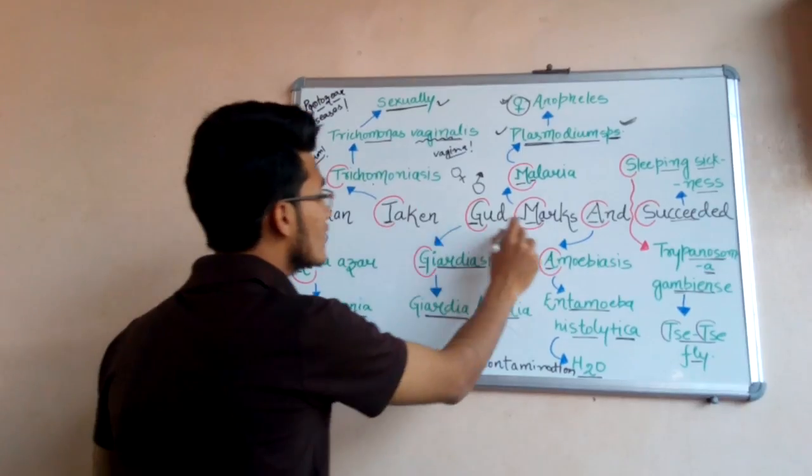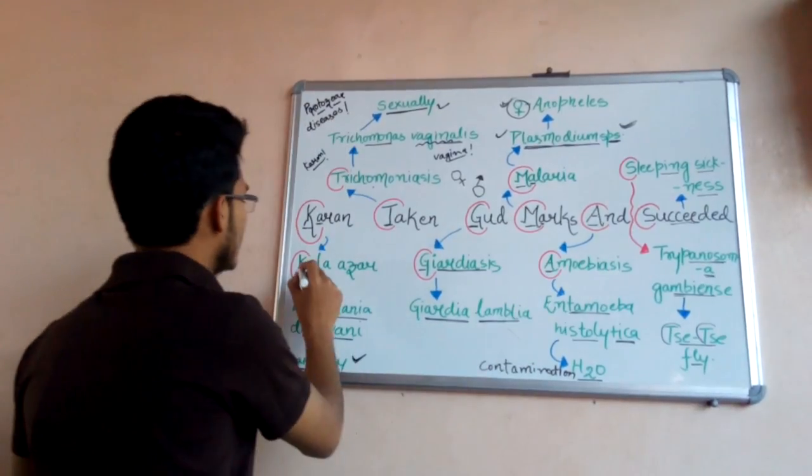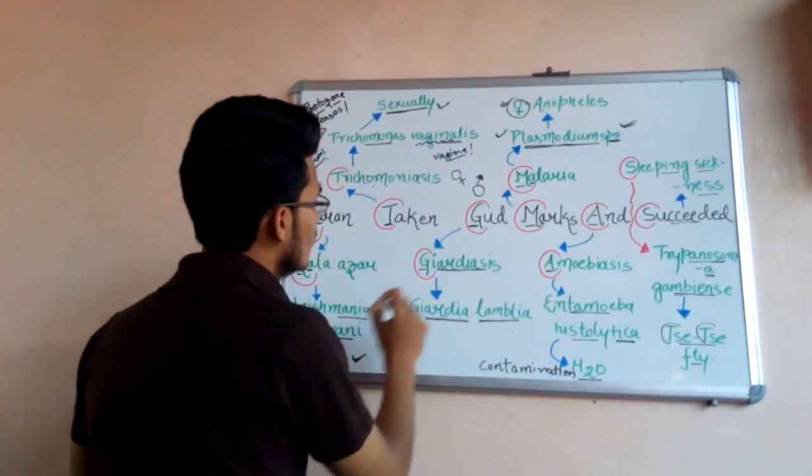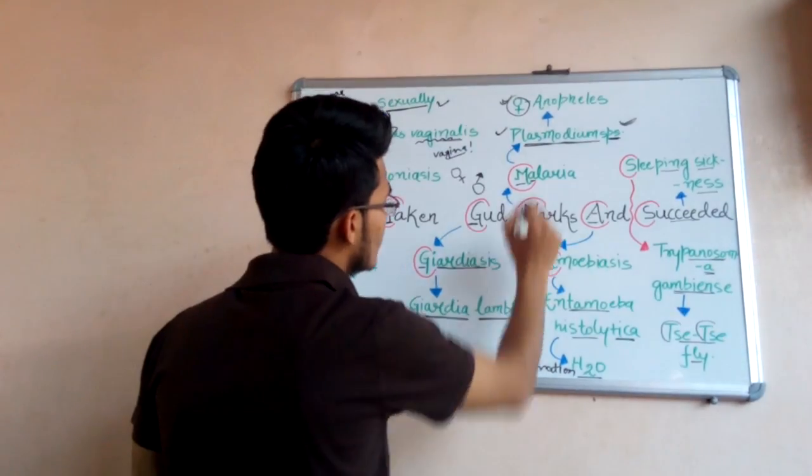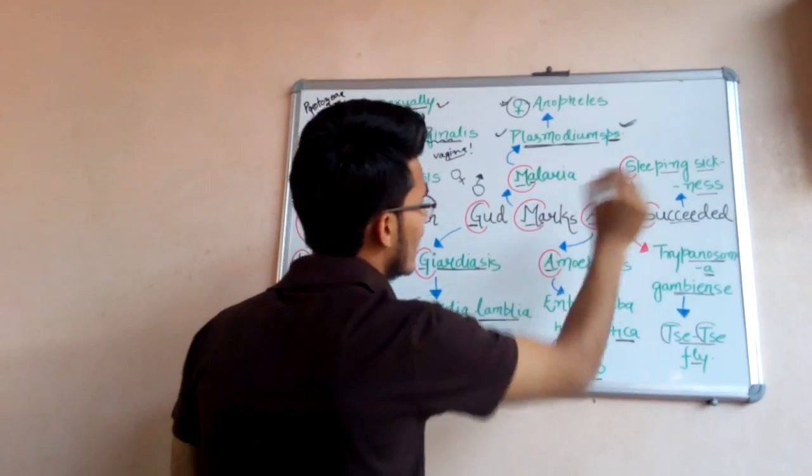So it goes like this: Karan taken good marks and succeeded. That means Kala Azhar, Trichomoniasis, Giardiasis, Malaria, Amoebiasis, and Sleeping Sickness.